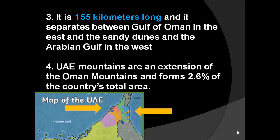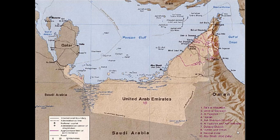The UAE mountains are an extension of the Oman mountains and form 2.6 percent of the country's total area. Looking at a UAE map, you can see that Oman is next to the UAE both in the southern and northeastern parts. The brownish-colored areas on the map represent the mountains. Whether you look from the top or the bottom, the mountains extend from Oman into the UAE and stretch back into Oman — that is why we say UAE mountains are an extension of the Oman mountains.